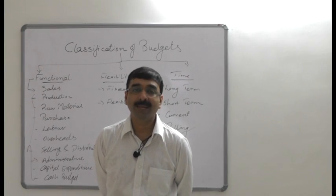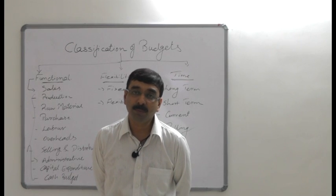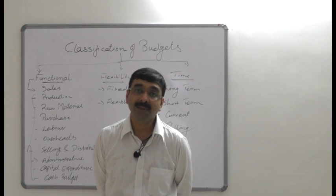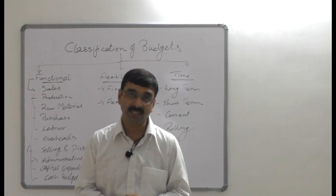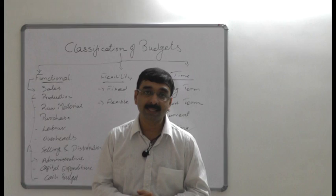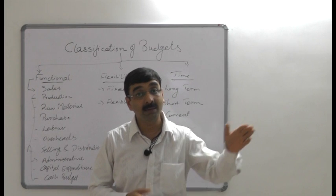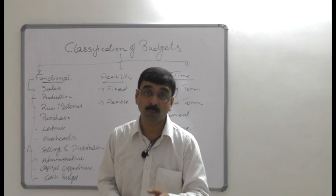For cash budgeting, there are a few methods to identify how the cash budget would be effective in the organization. The first method is the receipt and payment method. It is a very popular and universal method. Statistical data is calculated on the basis of requirements such as monthly, quarterly, weekly, or fortnightly basis.